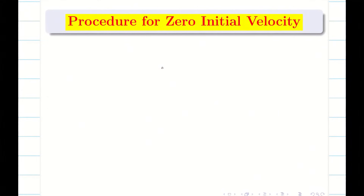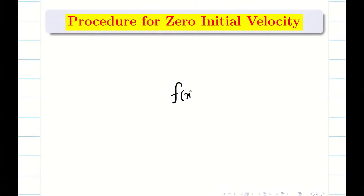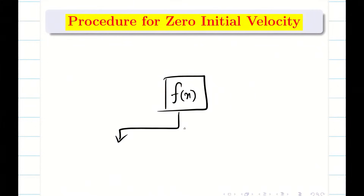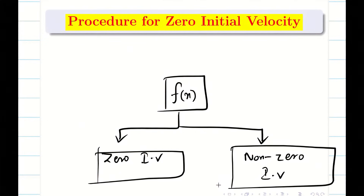Now let us start the procedure. This procedure is helpful to complete 80% of your problem. The remaining 20% involves identifying the function and finding bn, which we will learn at the end of this session. Suppose your problem is a zero initial velocity problem — what are all the steps you have to do in common?